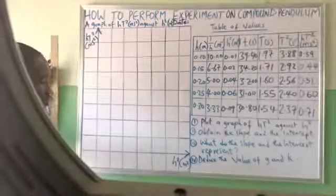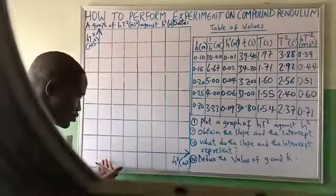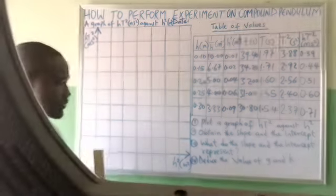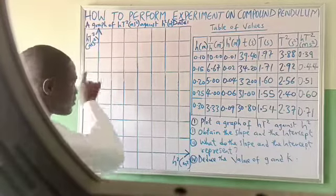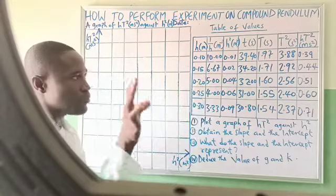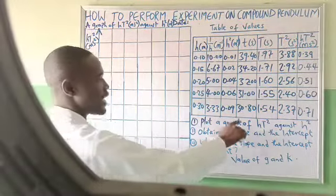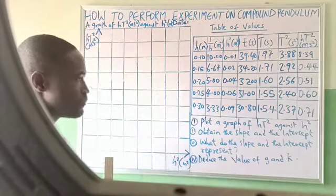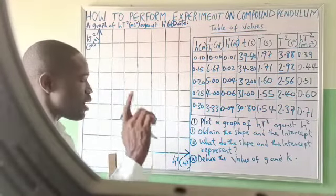When plotting your graph, you have to apply some logic. You need to make sure that what you're writing is easily seen, and you have to choose an appropriate scale. Choosing an appropriate scale means choosing numbers that, when assigned accordingly, allow you to locate the points you want to plot easily. Now, for this graph, they didn't tell us to start from the origin, so I may or may not start from the origin. The vertical axis is written first before the horizontal one.